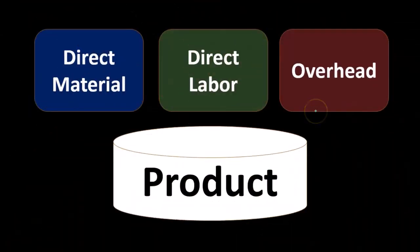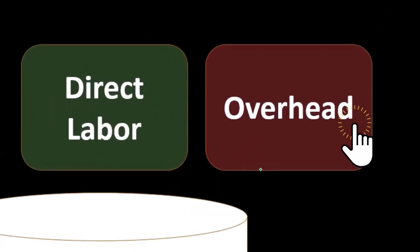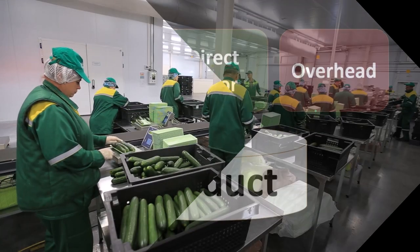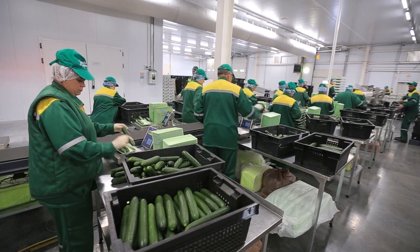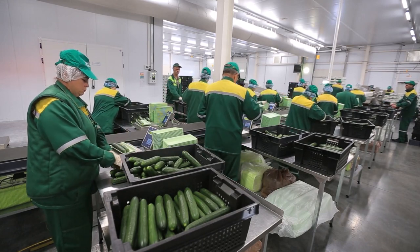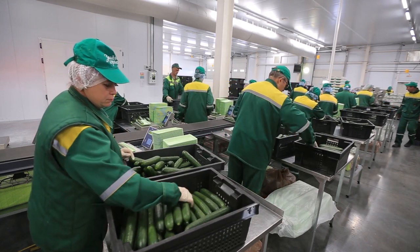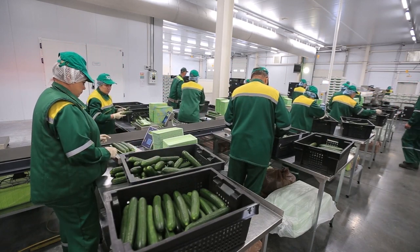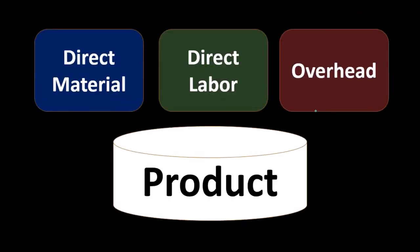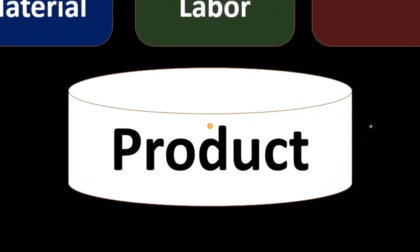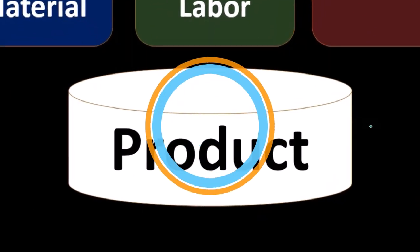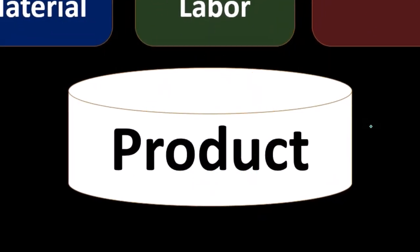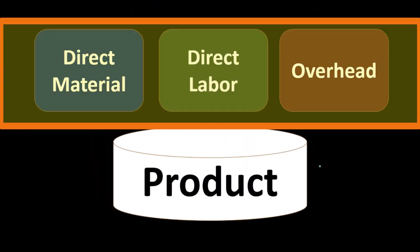And then there's overhead — anything dealing with the factory. Anything that deals with the factory will be part of the inventory. If we have depreciation on the factory, maintenance on the factory, or supervisors within the factory that are paid a salary, all that stuff is going to be in the inventory in some way. They're going to be part of the product. So anytime we think of inventory, we have direct materials, direct labor, and overhead.